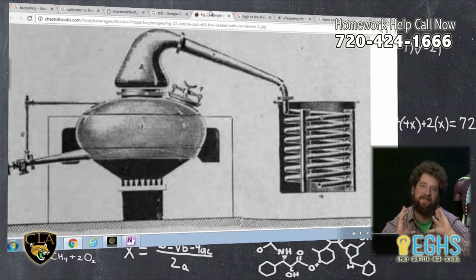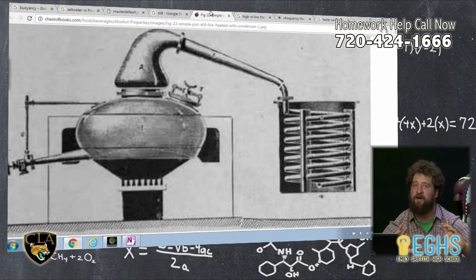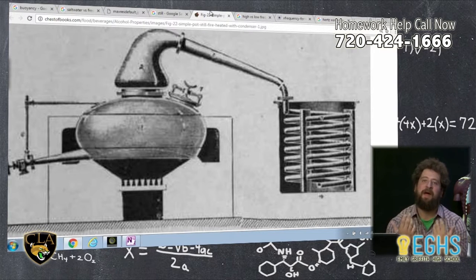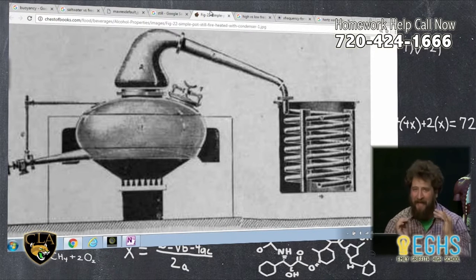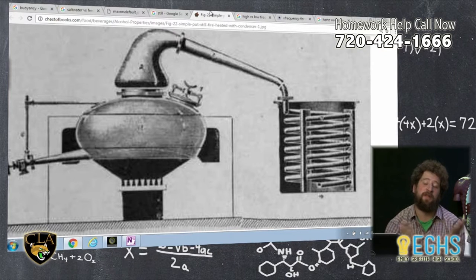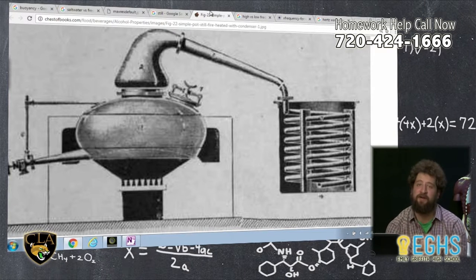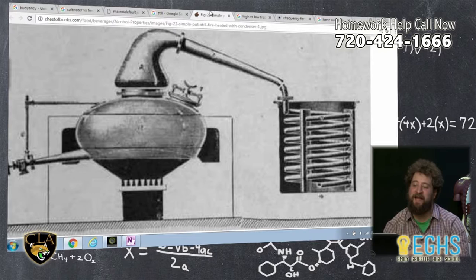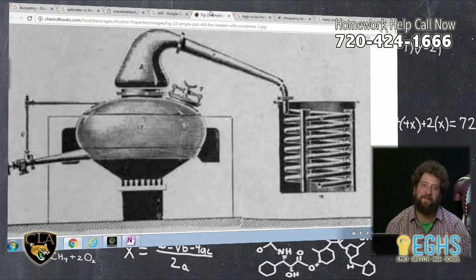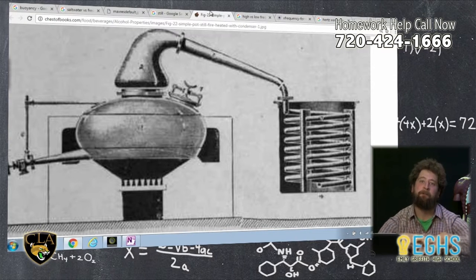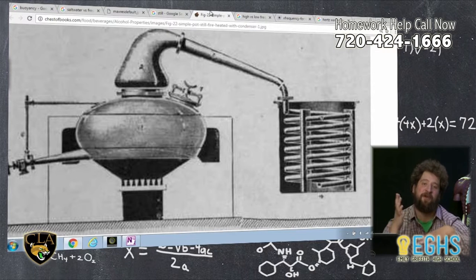And the concept would go that you would put this watery substance with a little bit of alcohol into the still, and then what would happen is you'd heat it from below. Alcohol evaporates more quickly than water does. It's more volatile, we say. And so as the liquid inside gets heated, more alcohol than water would evaporate off.